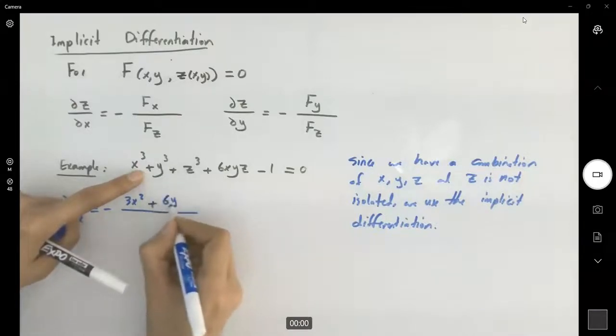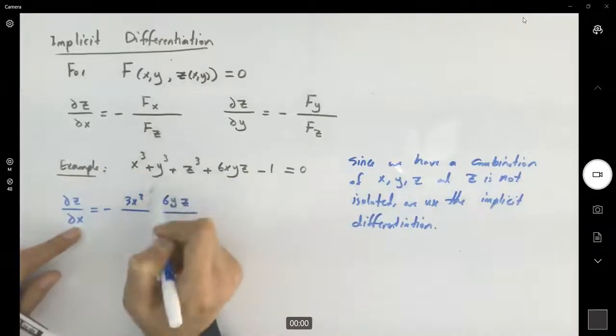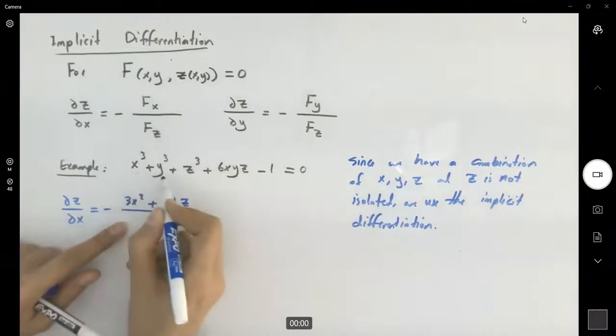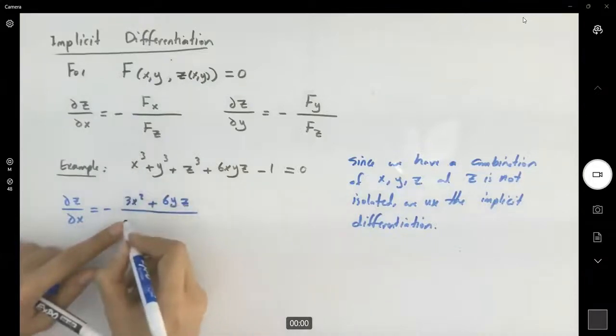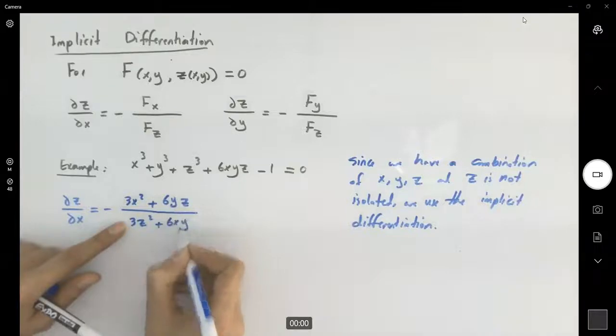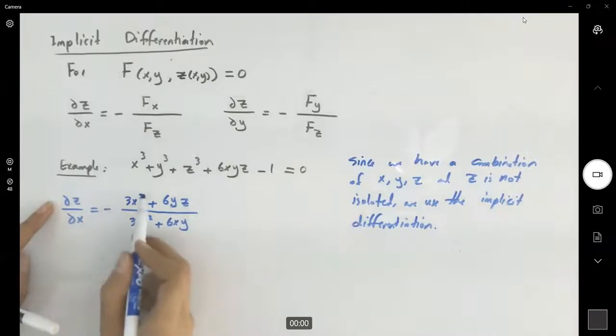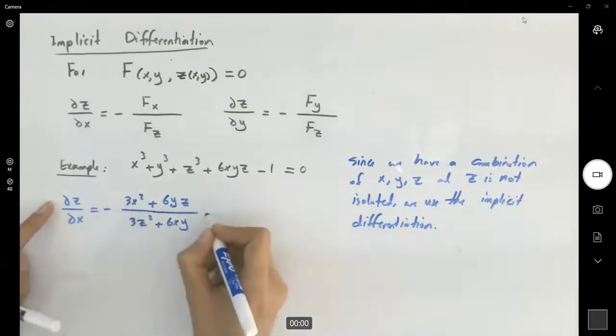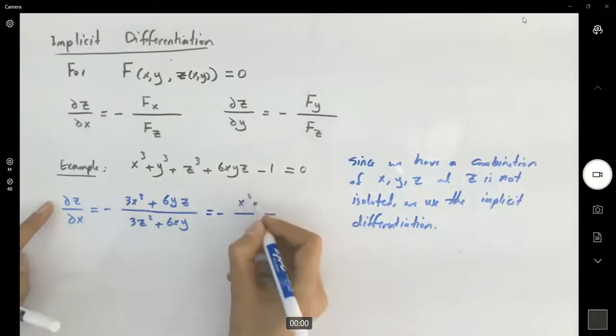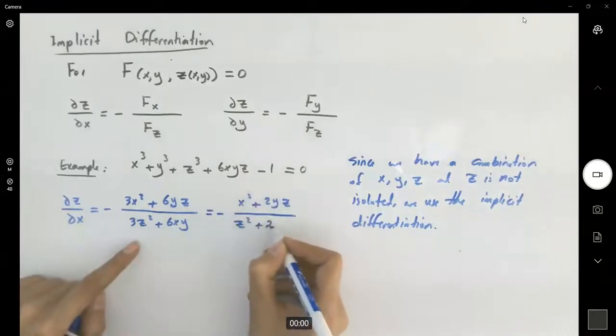And plus 6yz divided by partial derivative of f with respect to z. It means that x and y are equal to a constant, so the derivative is zero. The derivative of z cubed is 3z squared plus 6xy. Partial derivative of z with respect to x. You can distribute this negative sign to the numerator or to the denominator, or just leave it as it is. Of course, you can simplify by factoring out 3. It is negative x squared plus 2yz divided by z squared plus 2xy.